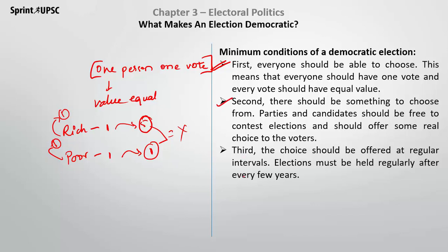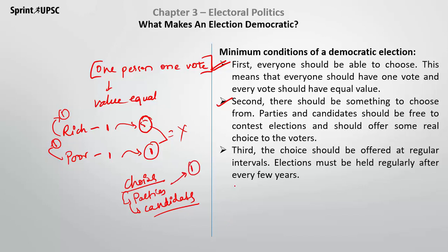The second condition is that there should be something to choose from — choices are important. Choices can be based on parties or on candidates. If only one party's representative stands in your constituency, they will win uncontested and you will have no choice. Therefore, in a democracy it is necessary that when elections are conducted, voters have choices, and people should be free to vote for whoever they want.